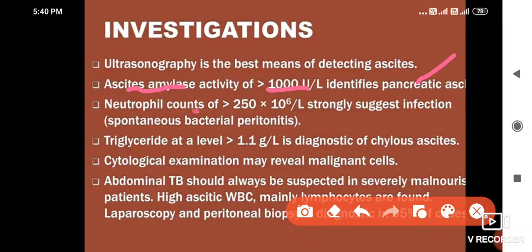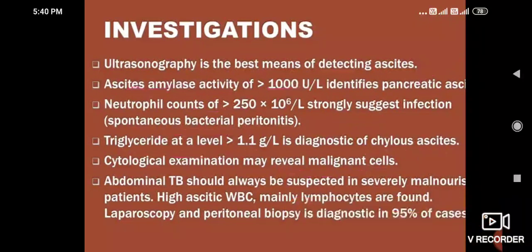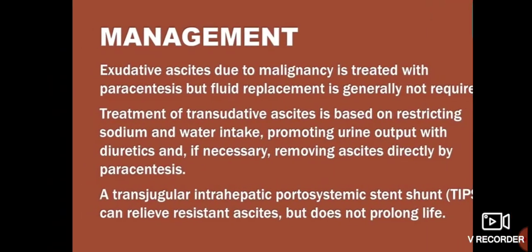A neutrophil count of more than 200 strongly suggests infection and spontaneous bacterial peritonitis. If triglycerides level is more than 1.1 grams per liter, it is diagnostic of chylous ascites. Cytological examination may reveal malignant cells. In abdominal TB, which should always be suspected in severely malnourished patients, high ascitic WBC mainly lymphocytes are found. Laparoscopy and peritoneal biopsies are diagnostic in 95% of cases.